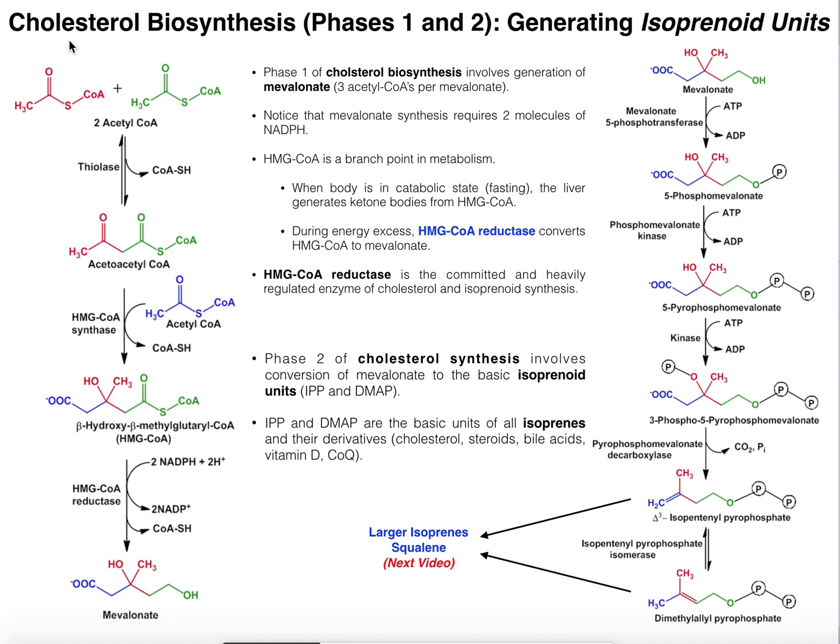Before we get into the phases, it's a very long, somewhat complicated process, so I'm going to break it into several videos. In this video we're going to see how we generate what are called isoprenoid units. Isoprenoid units are isoprenes.